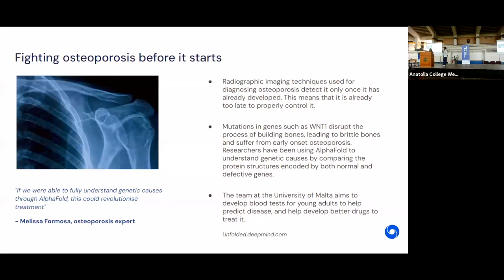The last area I'll cover is a disease called osteoporosis, which essentially makes your bones quite brittle, where your bones break more easily. Now, traditionally, the way that you detect osteoporosis is through radiographic imaging techniques, like x-rays. But these techniques can only detect osteoporosis once it's already developed. And at that point, it's actually really hard to control. There's a team at the University of Malta that are trying to understand how genetic differences lead to some individuals being more prone to osteoporosis than others. And so they're using AlphaFold to identify the structure of a protein that is someone who has a mutant gene compared to someone who has a normal gene. They're aiming to build a simple blood test so that young adults can detect this disease much earlier and also help develop better drugs as well.